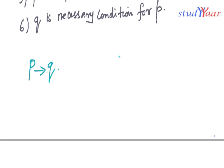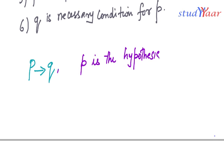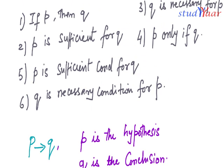In an implication P implies Q, P is known as the hypothesis and Q is known as the conclusion. These are important terminologies you should know.